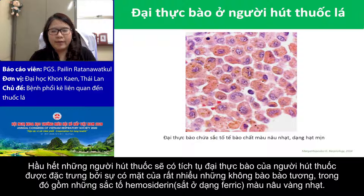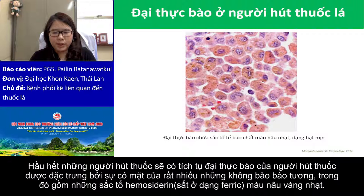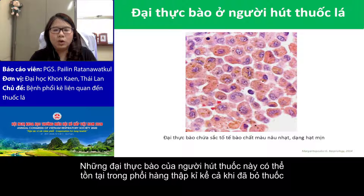Almost all smokers have an accumulation of smoker macrophage. This is characterized by the presence of cytoplasmic vacuoles containing fine golden-brown hemosiderin pigment. The smoker macrophage may persist in the lung for decades, even after you stop smoking.